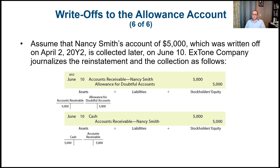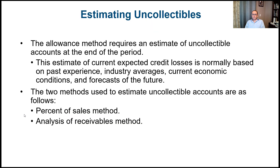Now let's talk about estimating the uncollectibles. The allowance method requires an estimate of uncollectible accounts at the end of the period. This estimate of current expected credit losses is normally based on past experience, industry averages, current economic conditions, and forecasts. The two methods used are the percentage of sales method — called the income statement approach — and the analysis of receivables method, called the balance sheet approach.